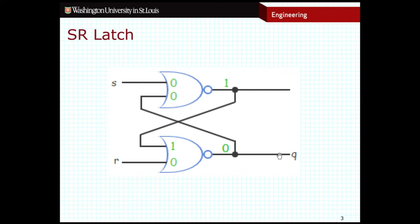So how does it work? Well, you see that we actually have one output down here called Q. This is going to be the output of our latch. And consider what happens in the case where S is equal to 1 and R is equal to 0.